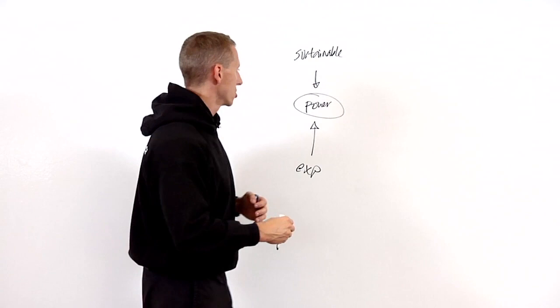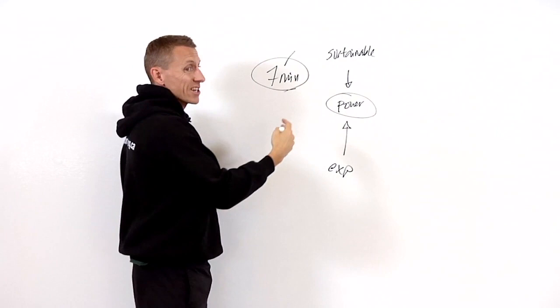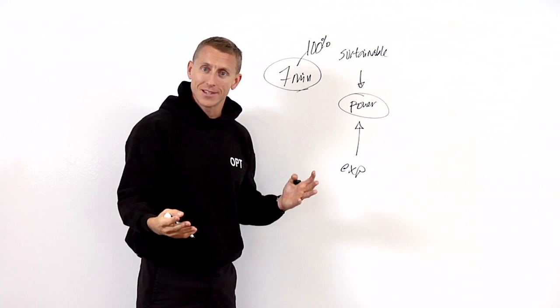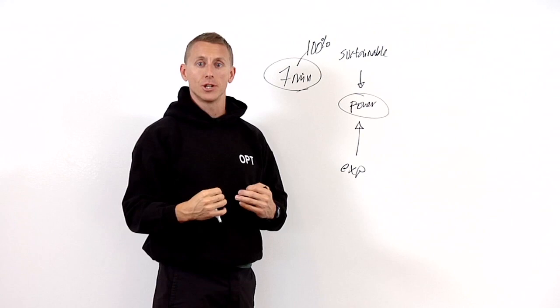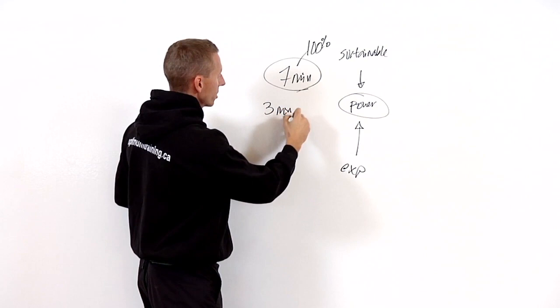If I said do as much as you can in that seven minutes, let's call it a test, and that's 100% within that test. So if I wanted to train you to get better at that, I wouldn't ask you to do seven minutes hard all the time. That makes sense, right? I'd ask you to go at a lower percentage of that seven minutes of work. So how about I get you to do 3 minutes of work, and let's call it 80% effort relative to what you do in your test.